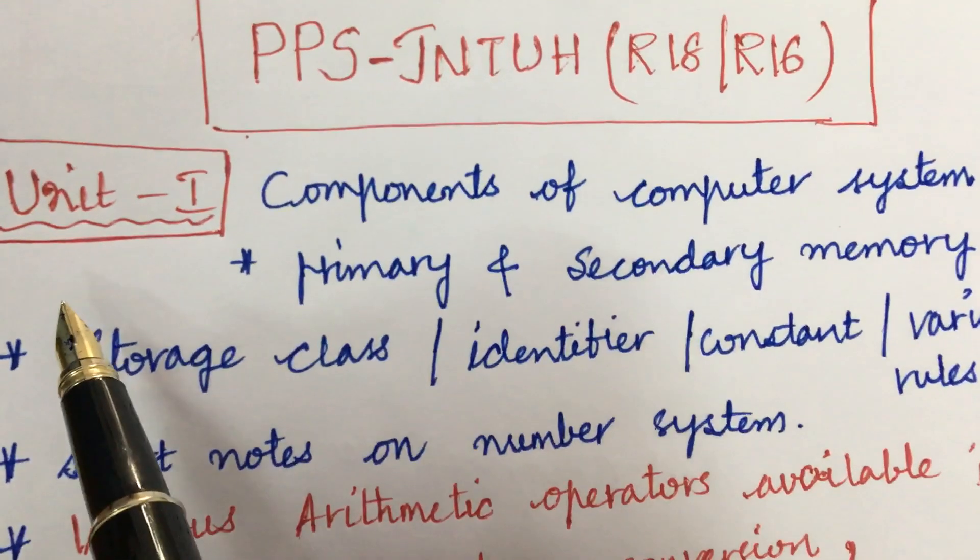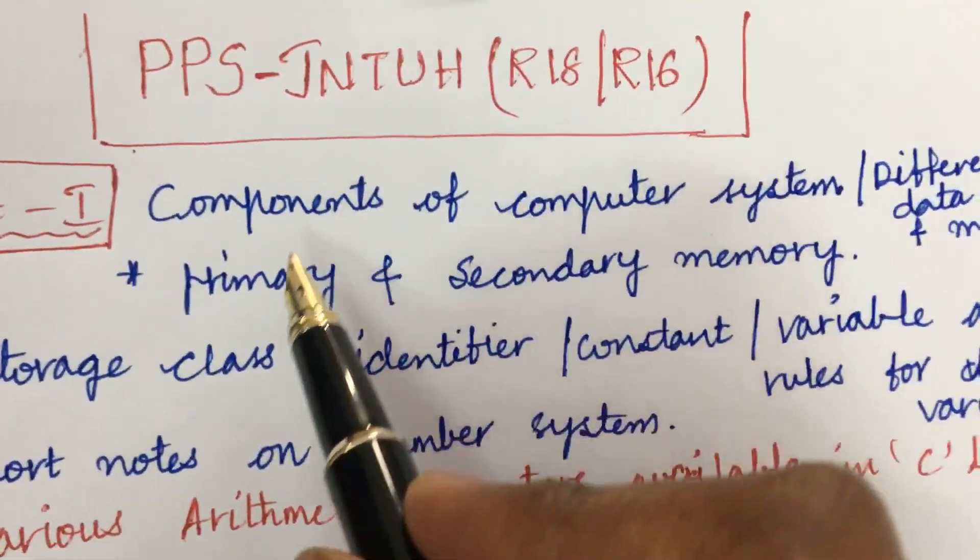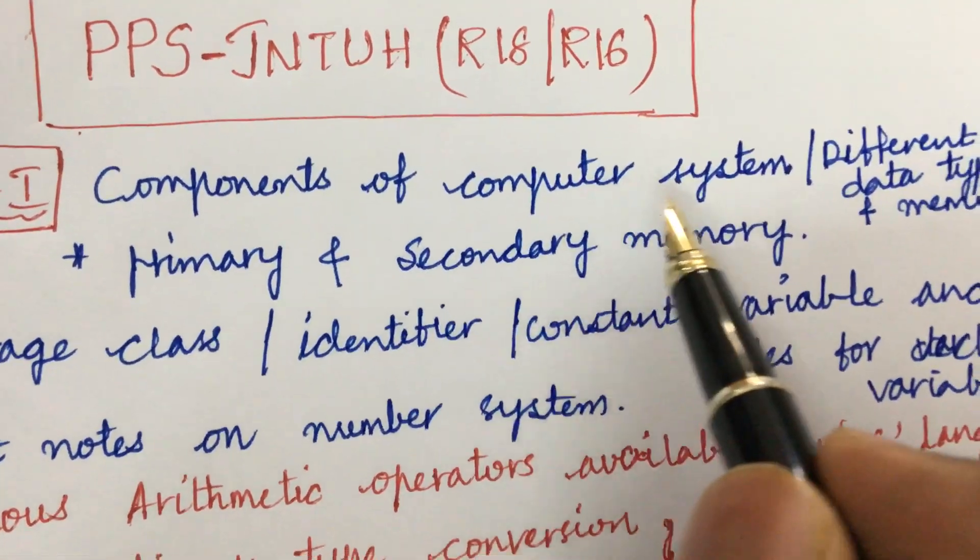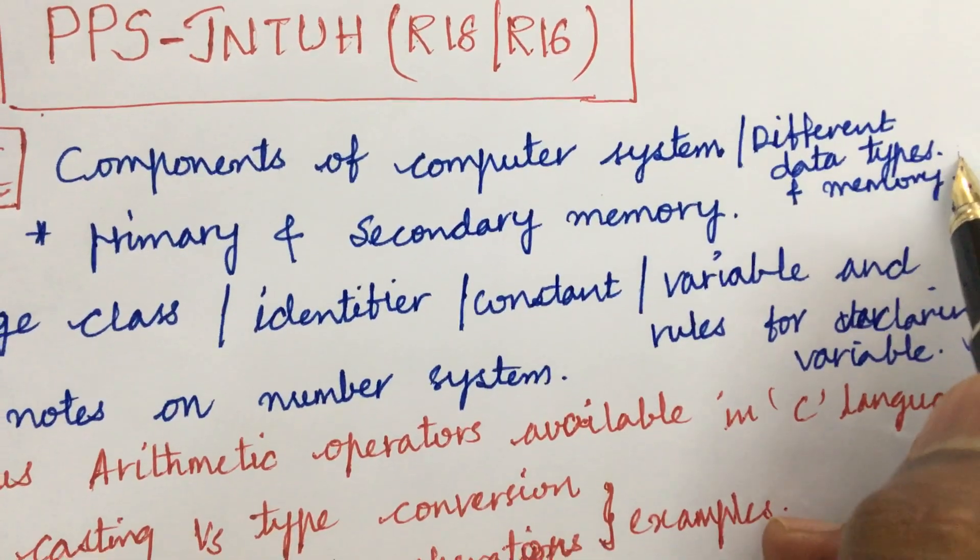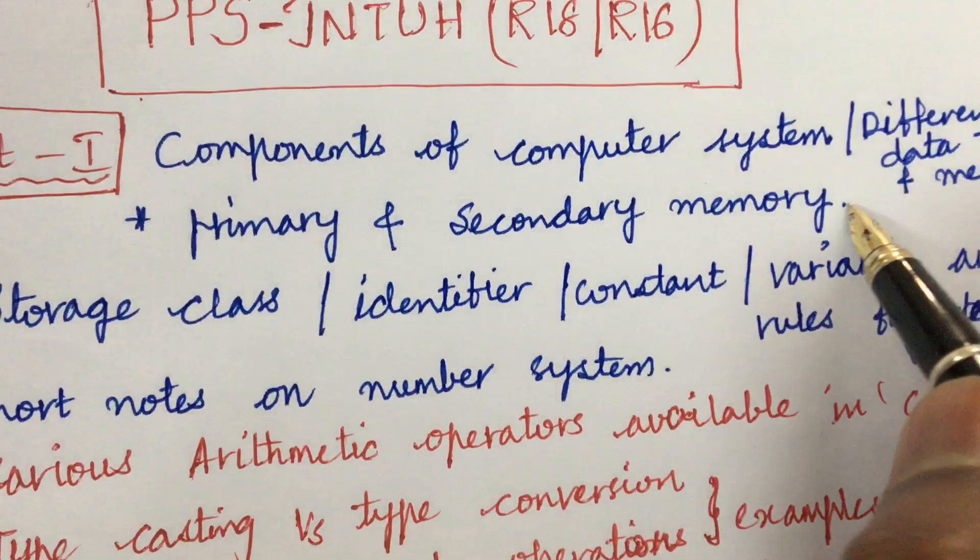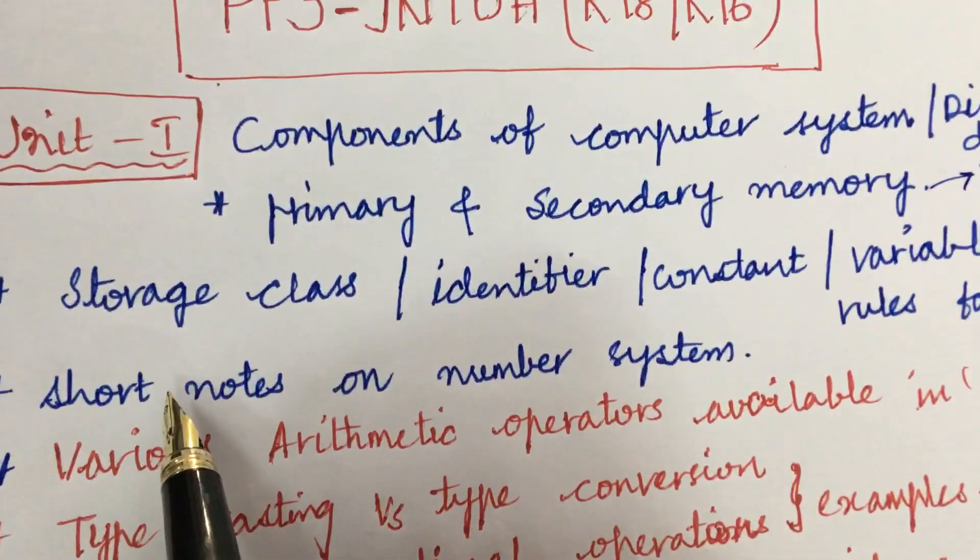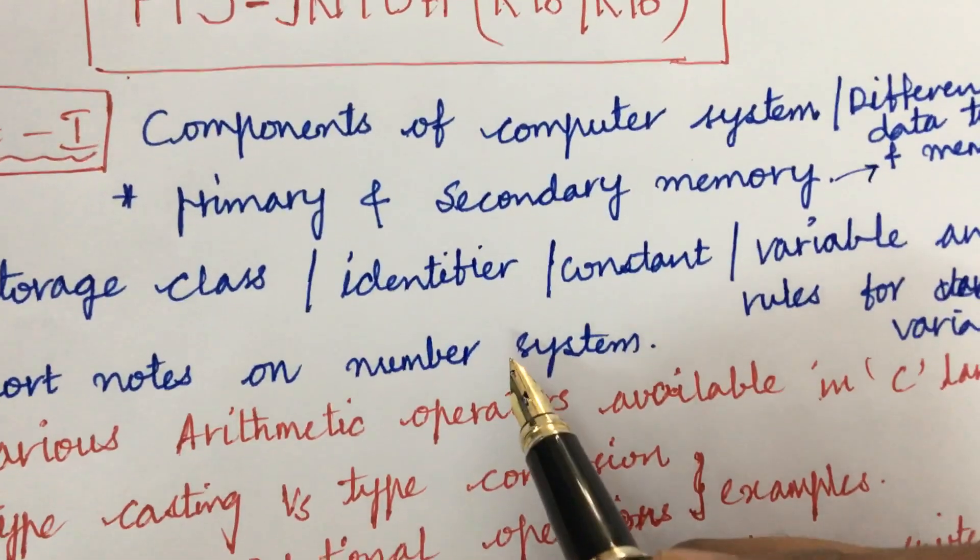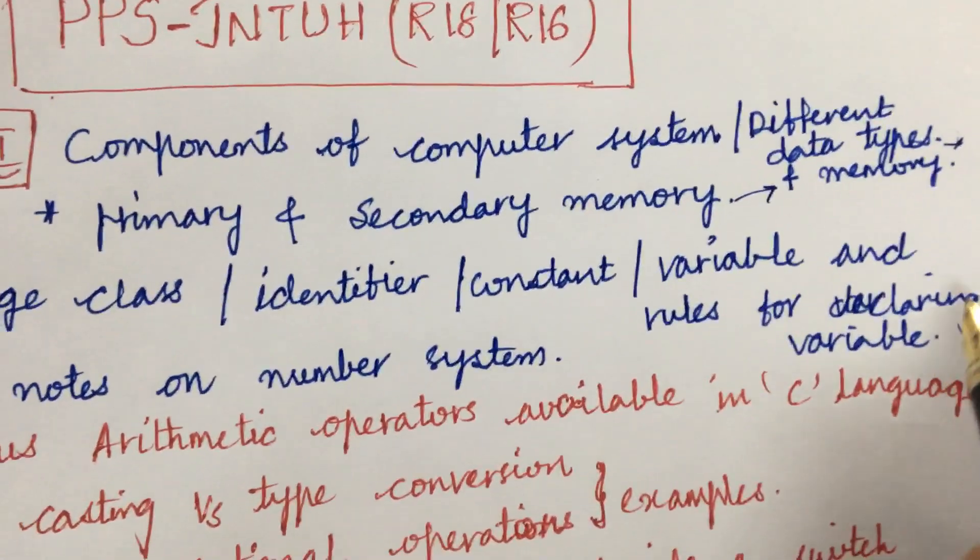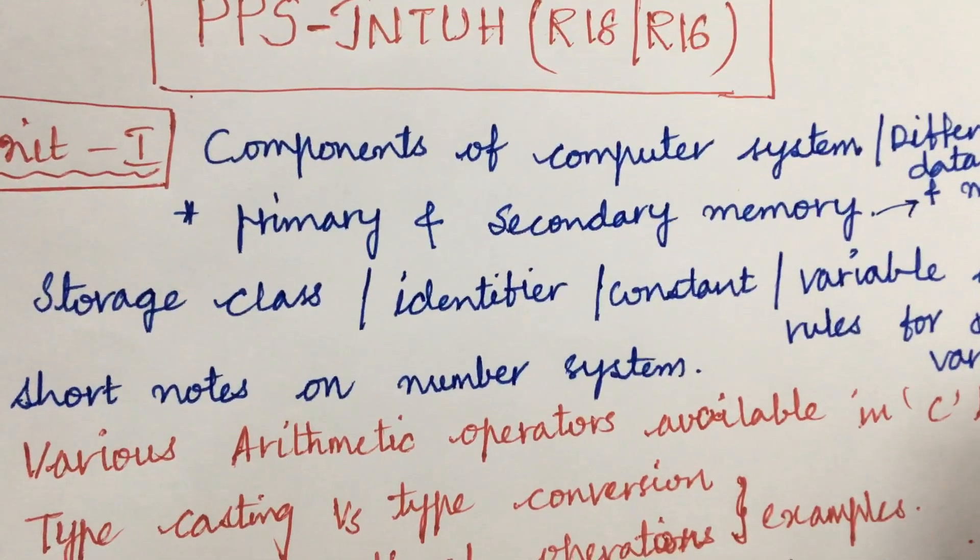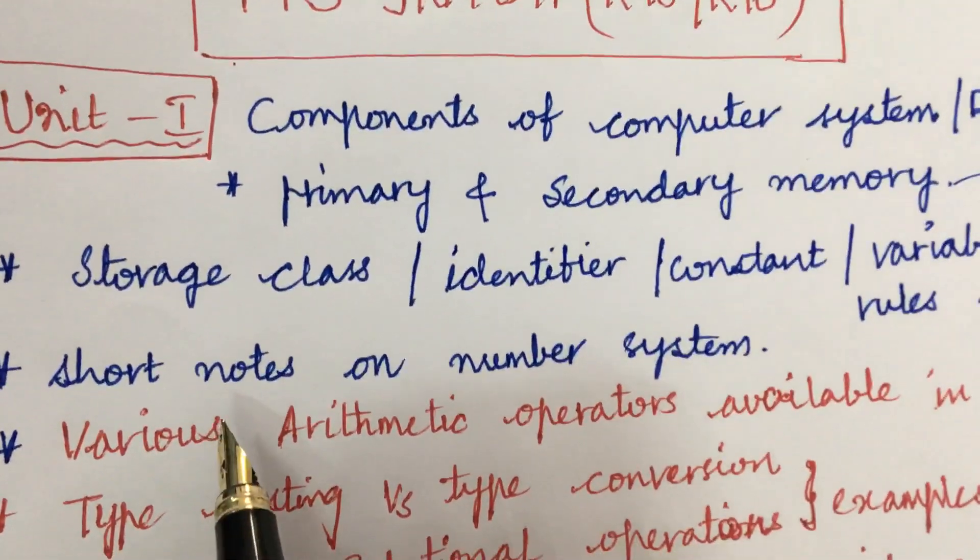First coming to Unit 1, the first and foremost question I can give you is components of computer system as well as the different data types and memory types, primary and secondary memory. What are the different storage classes, identifier, constant, variable, and the rules for declaring a variable - this is said to be very important.